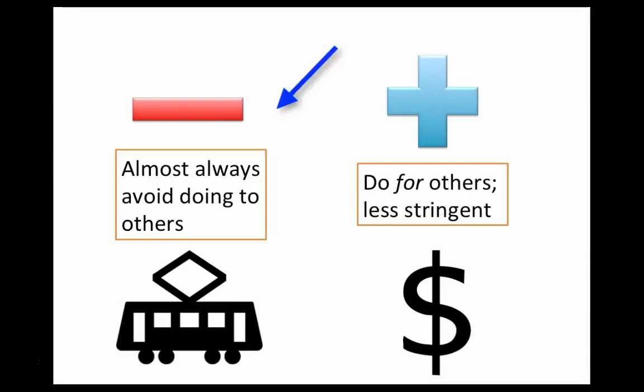Negative moral duties are duties of non-interference, things you must avoid doing to others. They include things such as duties against stealing or against causing injury or death to others. It seems clear that running someone over with a trolley would violate a negative duty toward them.